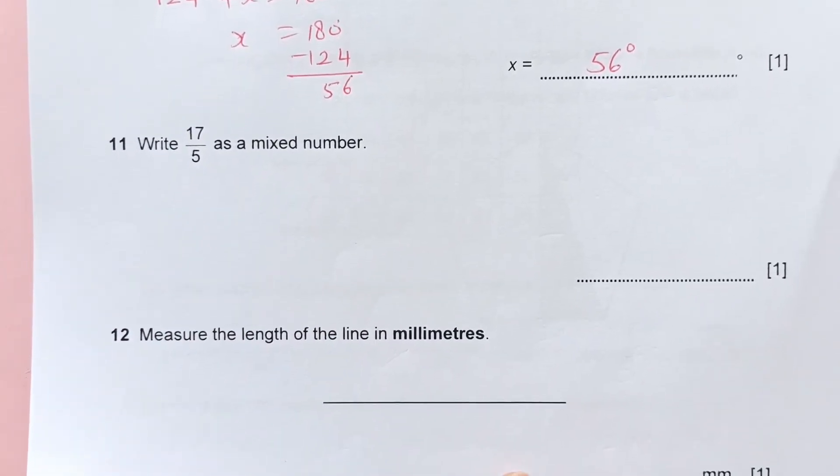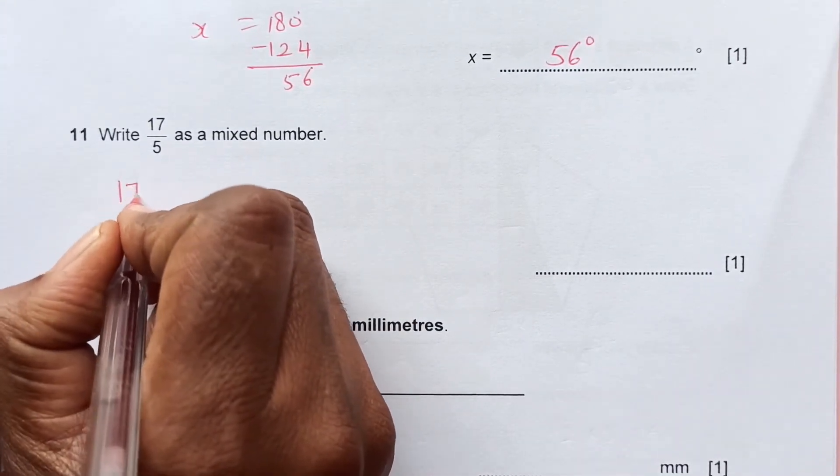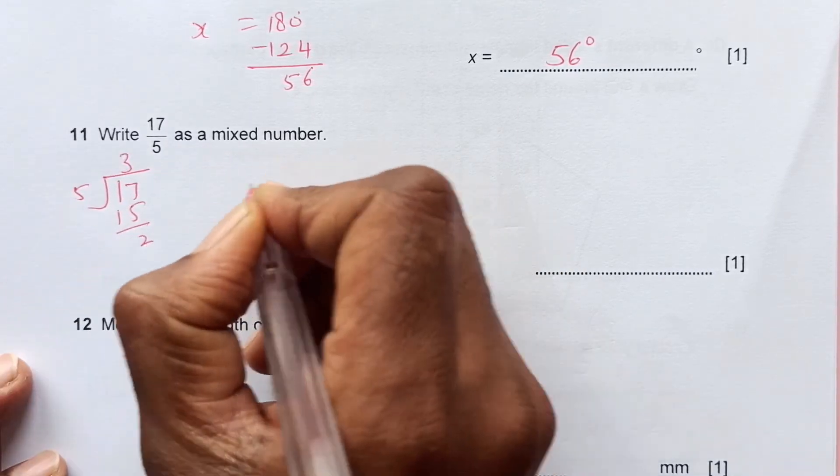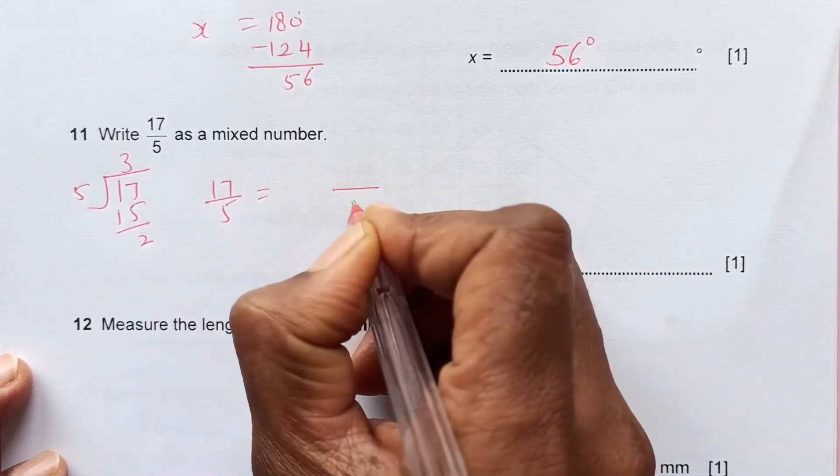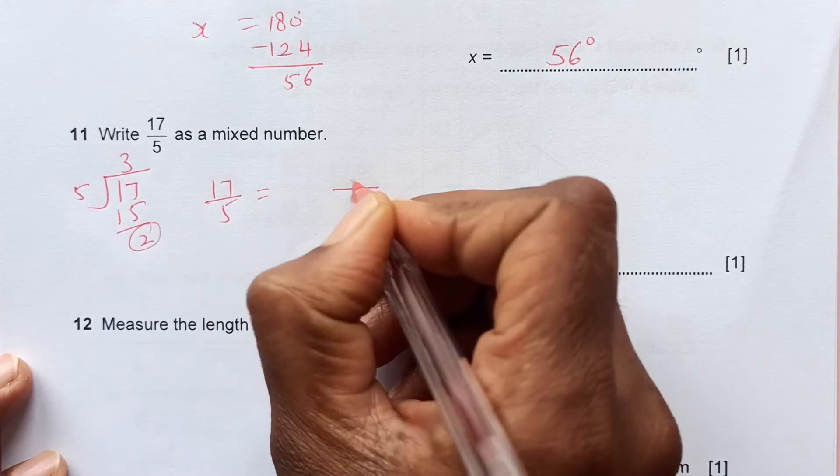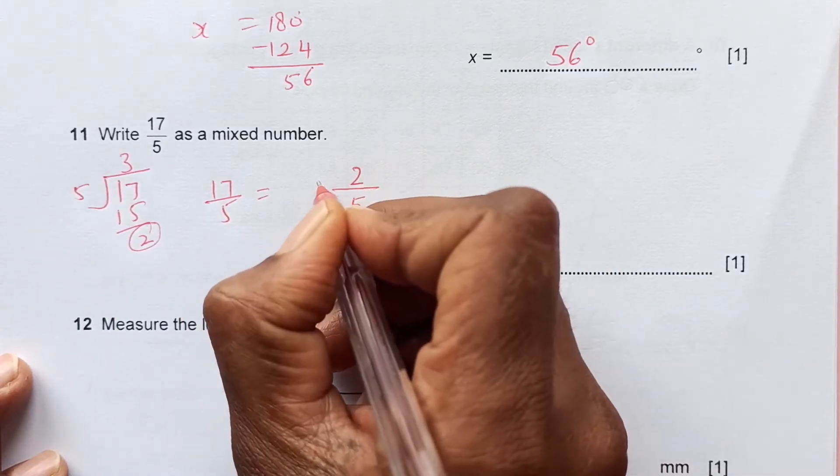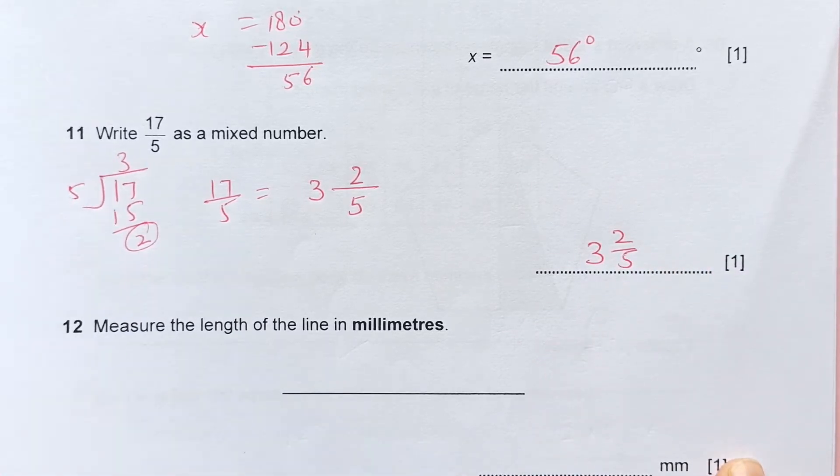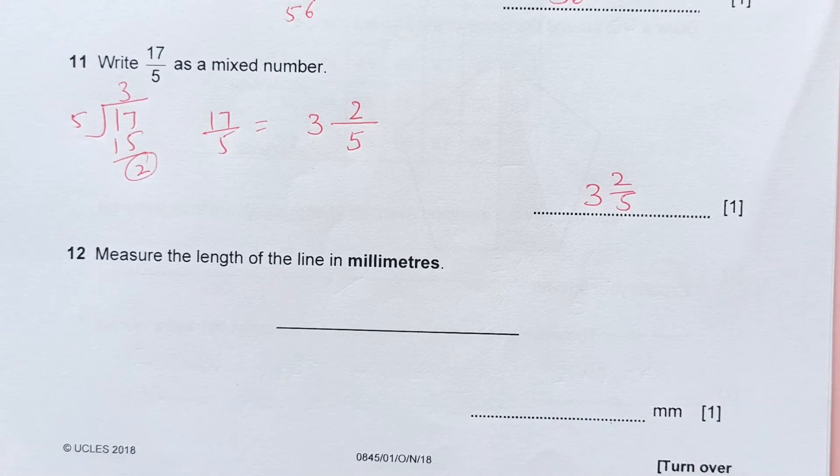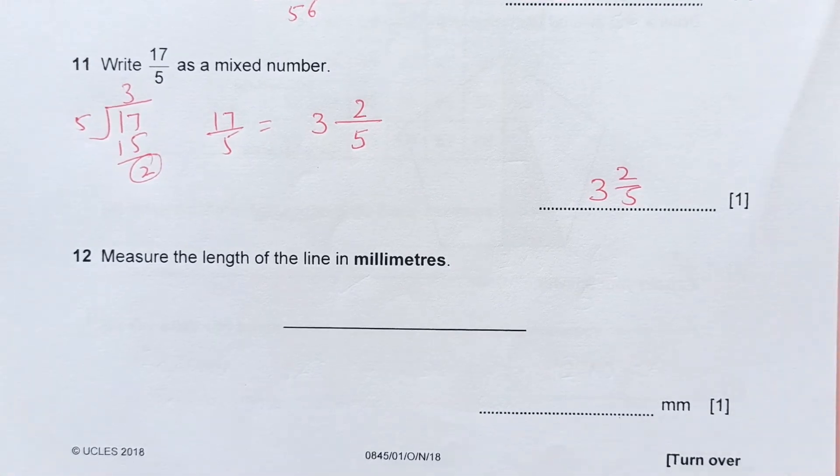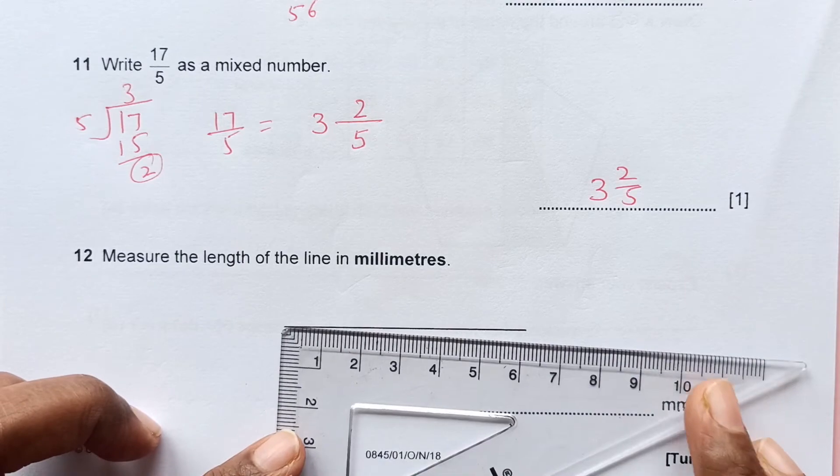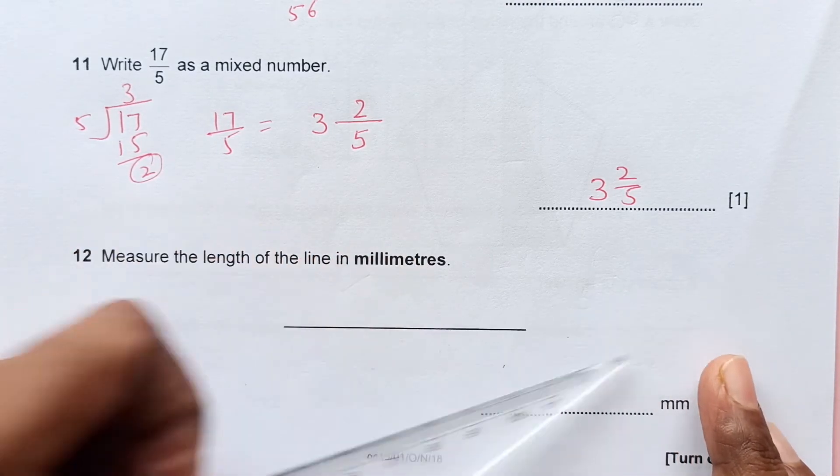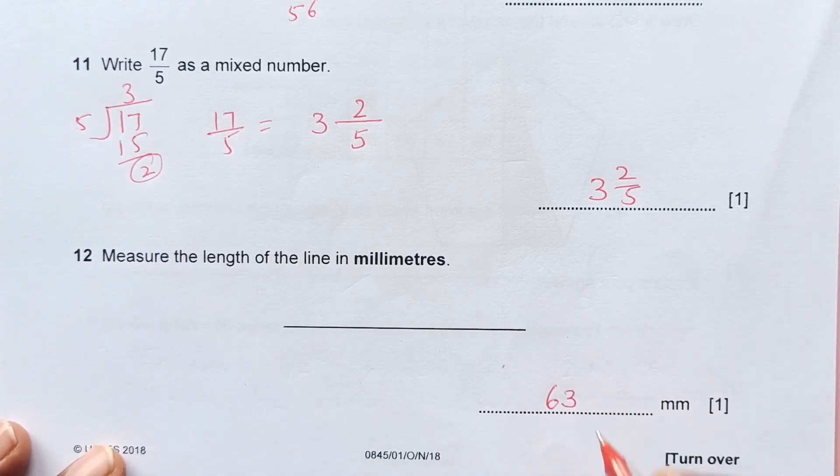Number 11. Write 17 over 5 as a mixed number. We need to divide 17 by 5. 5 times 3 is 15. Remainder goes up here and denominator always remains in denominator. So 3 and 2 over 5. Number 12. Measure the length of the line in millimeters. It is 6.3, that is 63 millimeters.